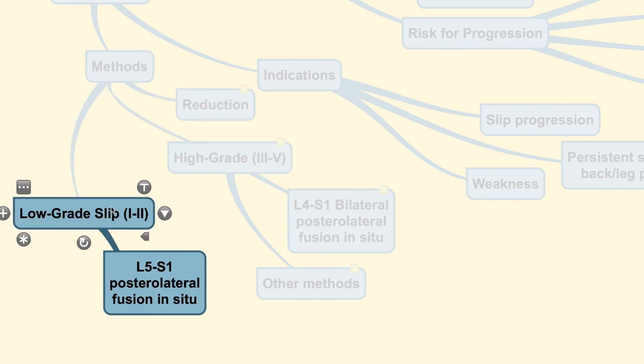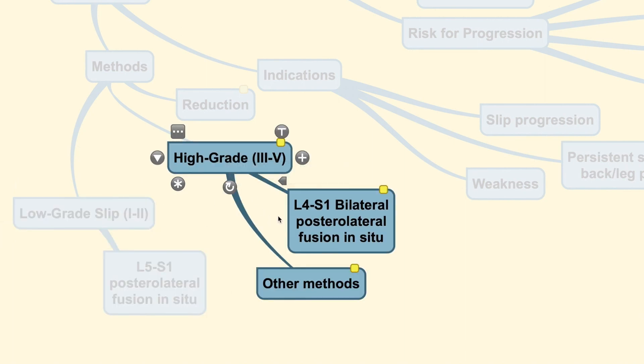So usually, in a slip that is still slightly low grade, you only need to do a L5-S1 posterior lateral fusion in situ. While in higher grades, you could fuse a little bit higher up, going to the L4-S1 bilateral posterior lateral fusion in situ. Now, the L5 is usually not being chosen as the placement site of the pedicle screws, because the L5 is already too far anterior to maintain the effect of the L5-S1 fusion.